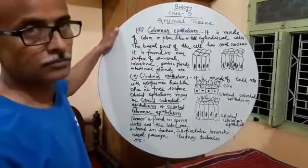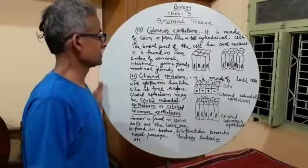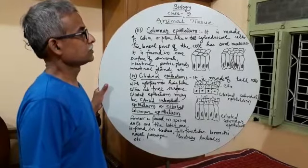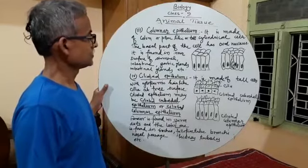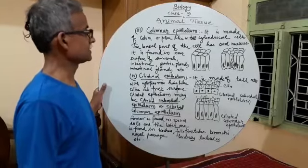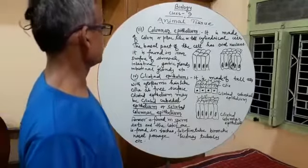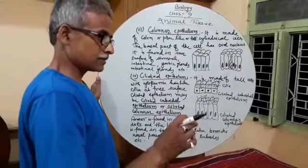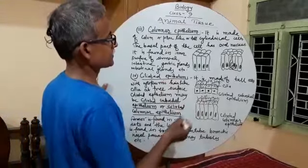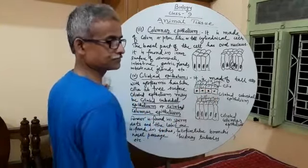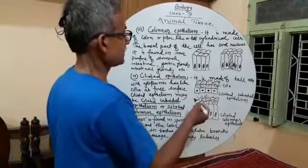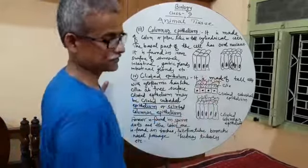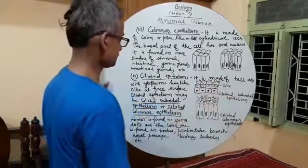The fourth type of epithelium is ciliated epithelium. It is made of tall cells with cytoplasmic hair-like cilia at the free surface. The shape of the cell may be cuboidal or columnar, and hair-like outgrowths are present on the free surface. Those are called cilia.